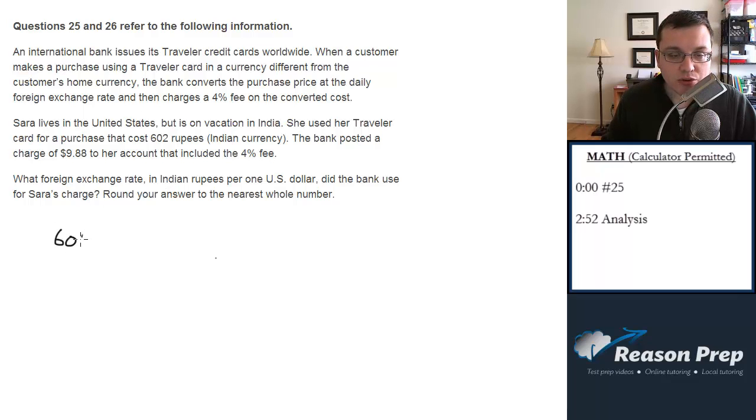We've got 602 rupees, and we're going to convert this to dollars, we'll call it D dollars, and then we're going to apply a 4% fee, and when we do that we're going to get the final charge which is $9.88.